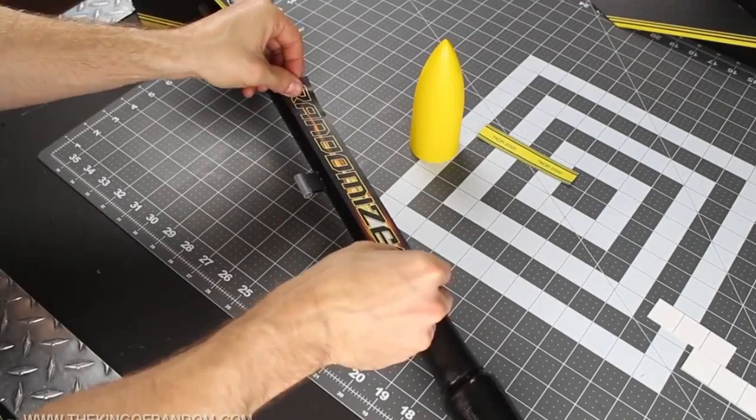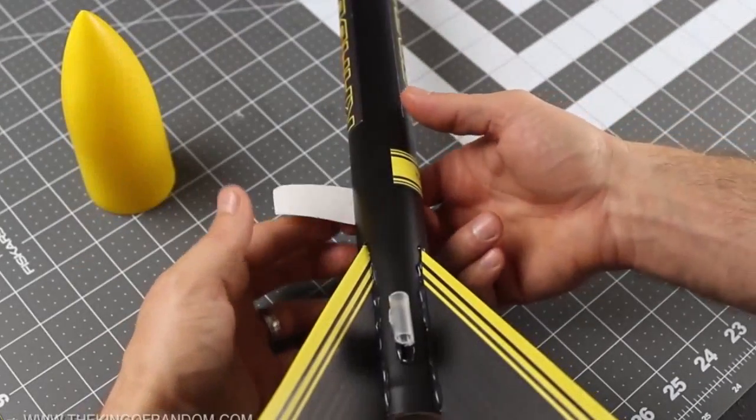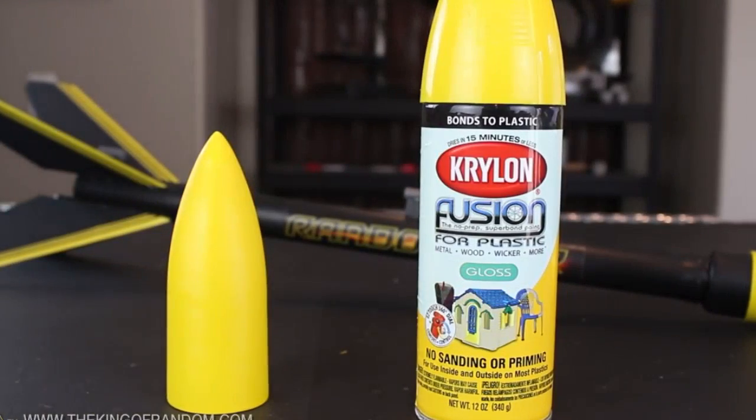At this point, you can add the body tube stickers, which I like to center along the upper launch lug. The last sticker goes around the base of the rocket, just above the fins, and with that, you're just about done. All that's left to do is attach the parachute and the nose cone.